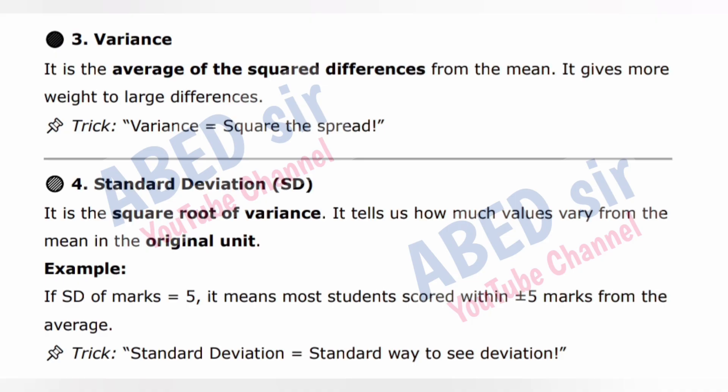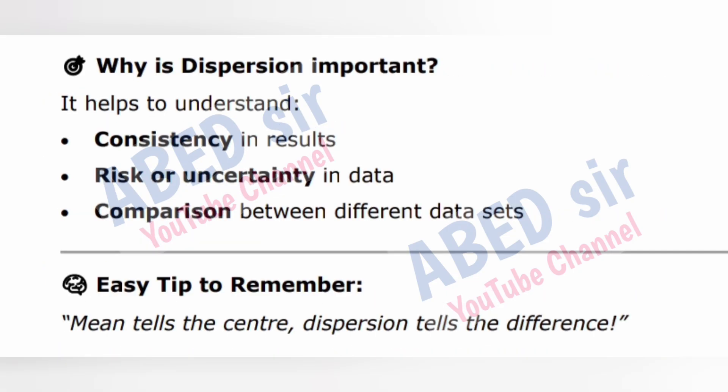4. Standard deviation (SD) — the square root of variance. It tells us how much values vary from the mean in the original unit. Example: if SD of marks = 5, it means most students scored within ±5 marks from the average. Trick: standard deviation = standard way to see deviation. Why is dispersion important? It helps to understand consistency in results, risk or uncertainty in data, and comparison between different data sets. Easy tip: mean tells the center, dispersion tells the difference.